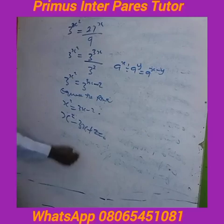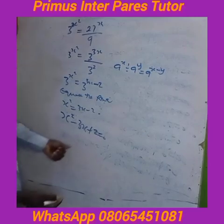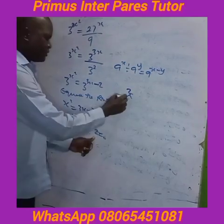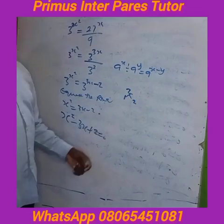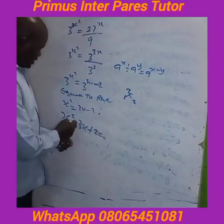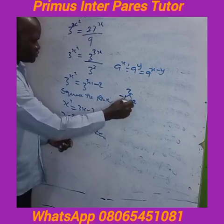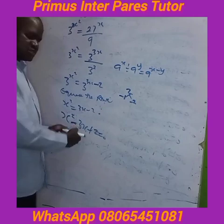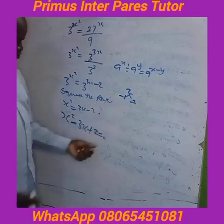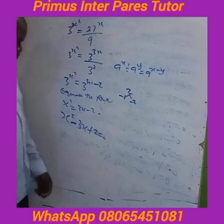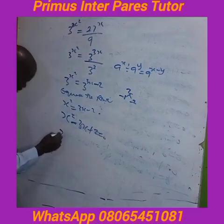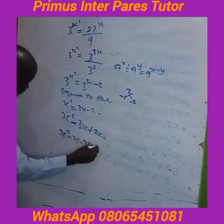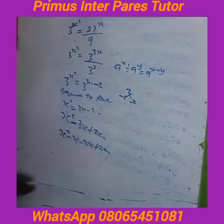If you want to factorize, you need two numbers that are factors of 2. The factors of 2 are 1 and 2. So you need minus 1 and minus 2, because minus 1 plus minus 2 gives minus 3, and minus 1 times minus 2 gives plus 2. So you will have s squared minus x minus 2s plus 2 equal to zero.